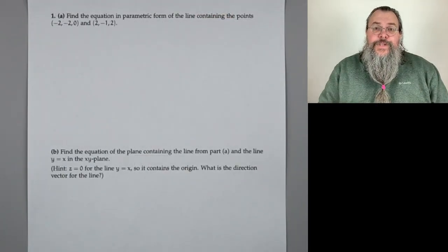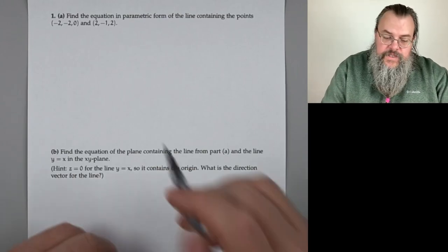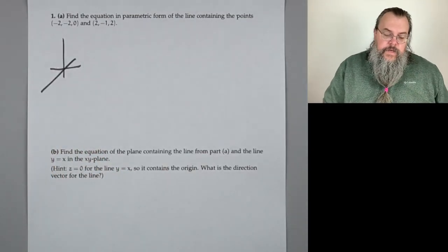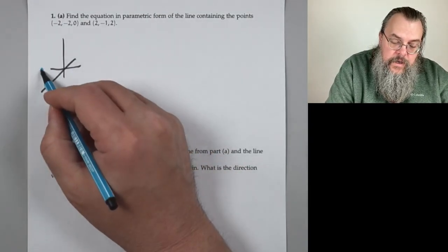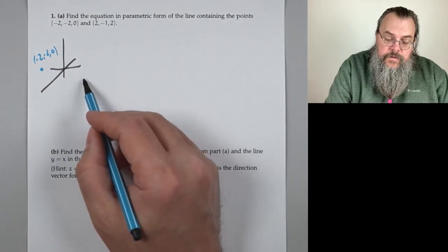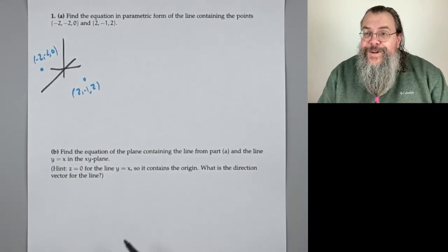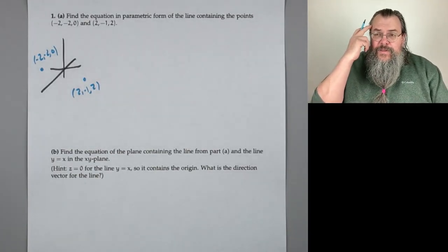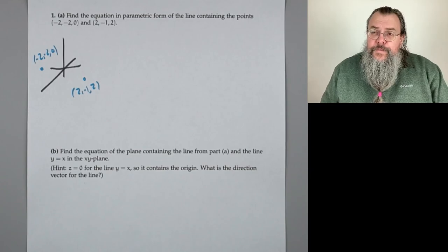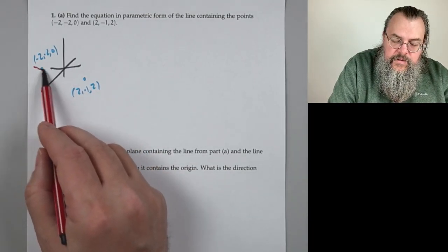Number one. Find the equation in parametric form of the line containing the points (−2, −2, 0) and (2, −1, 2). We're in three dimensions because we have three coordinates. We have one point at (−2, −2, 0) and another point at (2, −1, 2). When making a line, I always need two pieces of information: a point, and a direction — in 2D we call it slope, but in general it's a direction.